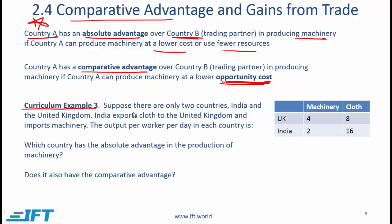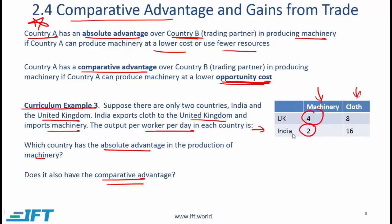This is another simple but extremely useful example. Suppose there are only two countries, India and the United Kingdom. India exports cloth to the UK and imports machinery, and the output per worker per day is shown in a table, giving us the productivity of both countries with respect to machinery and cloth. The UK produces four machines per worker per day whereas India produces only two machines per worker per day, so clearly the UK is more efficient and therefore has the absolute advantage.